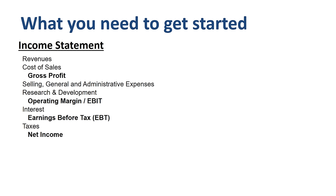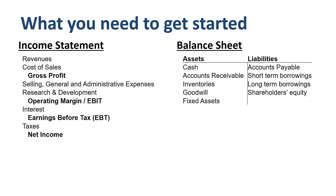What do you need to get started on a financial ratio analysis? You need an income statement — the overview of how much profit a company made during a year. You also need a balance sheet, an overview of what a company owns and what a company owes at a specific point in time.